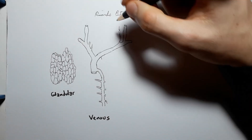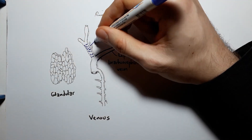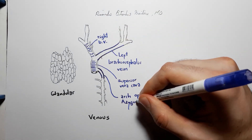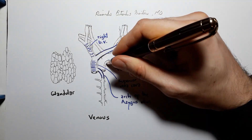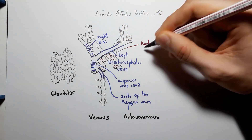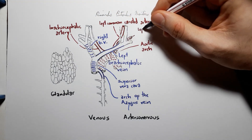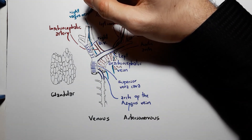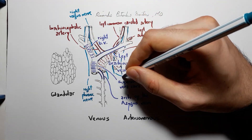Then the venous plane: behind the thymus you will see the left brachiocephalic vein, the right brachiocephalic vein, the superior vena cava, and the arch of the azygos vein. Delving deeper, you will then meet the arteries and nerves in the arterial-nervous plane, with the aortic arch and its branches — the brachiocephalic artery, the left common carotid artery, and the left subclavian artery — and also, laterally, the left and right vagus nerves, and more laterally, the left and right phrenic nerves.